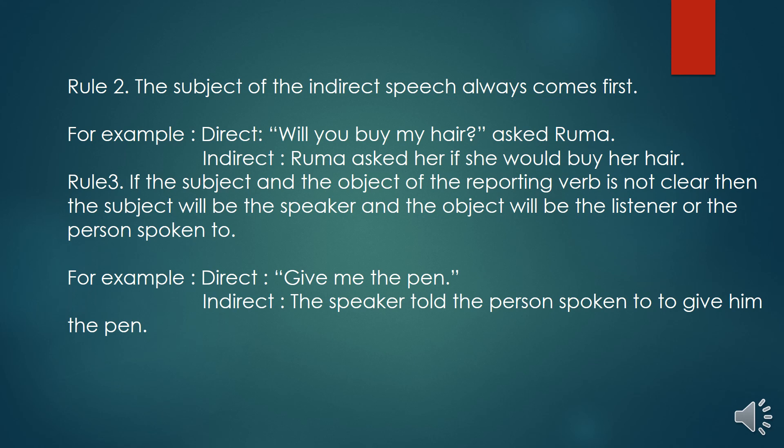Rule number three. If the subject and the object of the reporting verb is not clear, then the subject will be the speaker and the object will be the listener, or the person spoken to. For example, 'Give me the pen.' The speaker told the person spoken to to give him the pen.